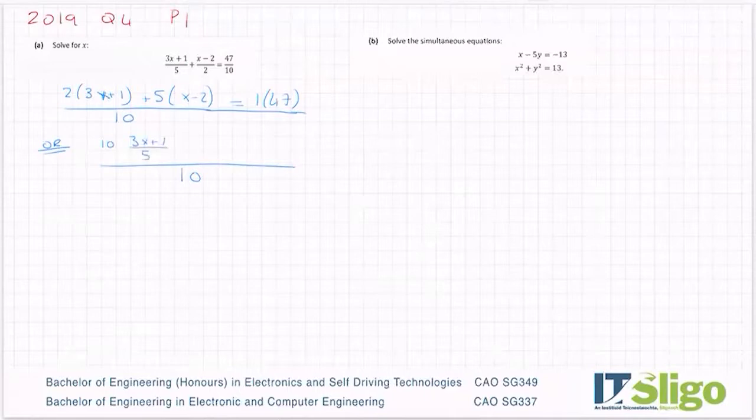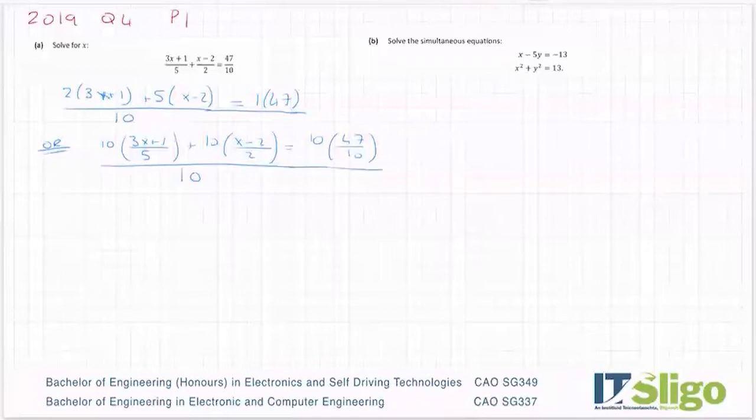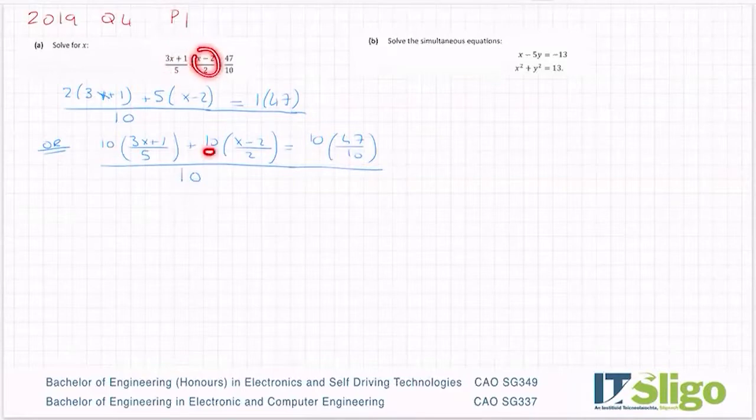Or you could of course get a common denominator of 10. So you take the common denominator and you multiply each part individually by the 10. That is another way that it's done.